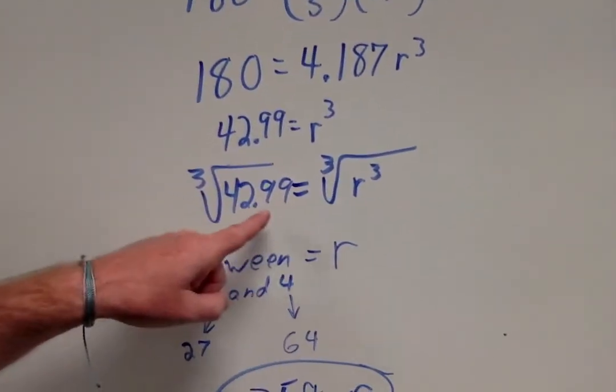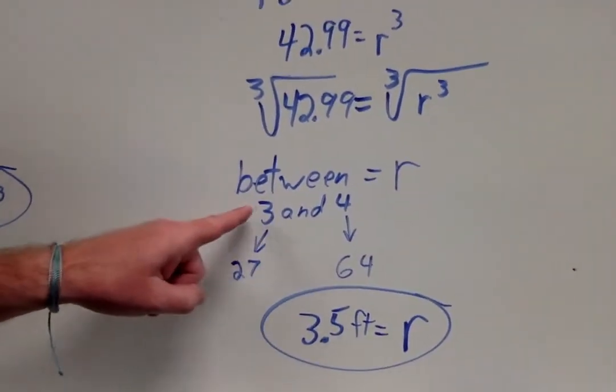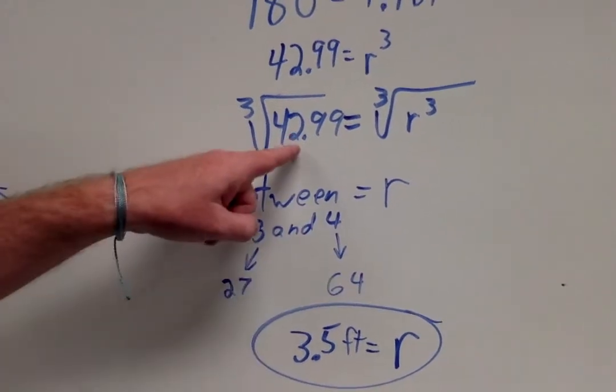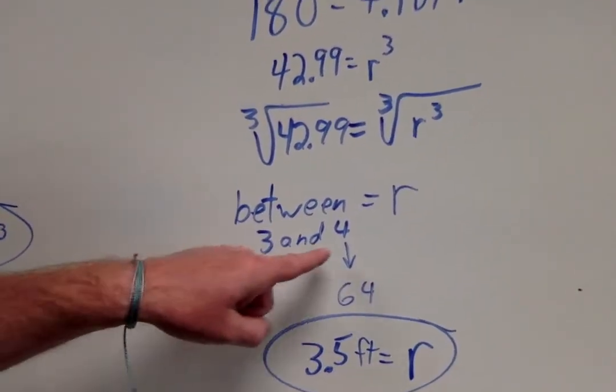Then I divided both sides by a 4.187! Which gives me r cubed is equal to about 42.99! Well, you take the cube root of both sides! Man, I didn't know! So, I deduced that 3 cubed is 27! 4 cubed is 64! That means that 43, let's call it 43, is going to be in between there! The answer's got to be in between the 3 and the 4!